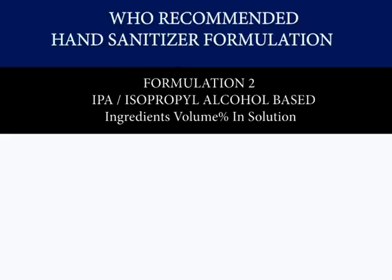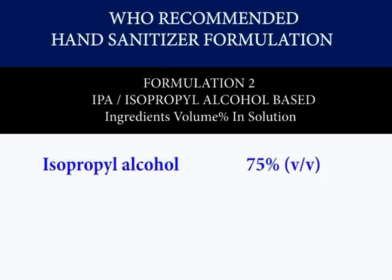Formulation 2: IPA or isopropyl alcohol-based. Ingredients in terms of volume per volume in solution includes isopropyl alcohol at 75%, glycerol at 1.45%,